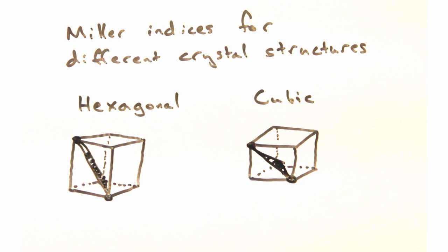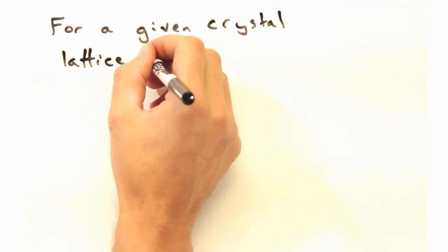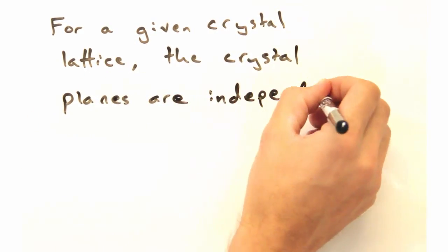Because Miller indices only depend on lattice vectors, we can also note that the crystal planes are independent of any centering or basis.